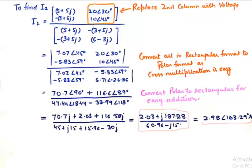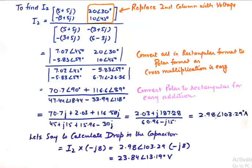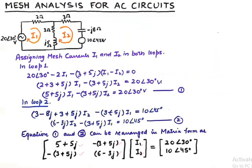So finally we get the loop 2 current and let us say if we were to calculate the drop in the capacitor that would have been I2 into J8. If we look into our diagram again I2 is flowing into this independent branch and it would have dropped some voltage here that would have been I2 into J8. And that is what we have done.